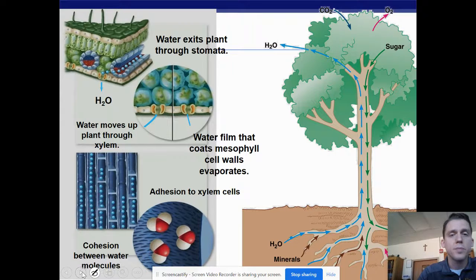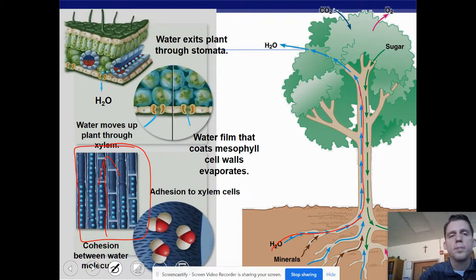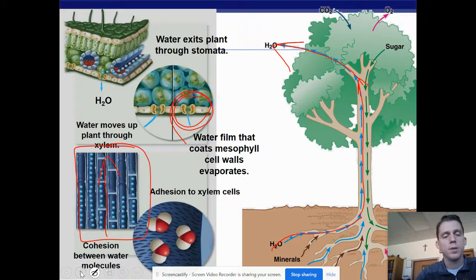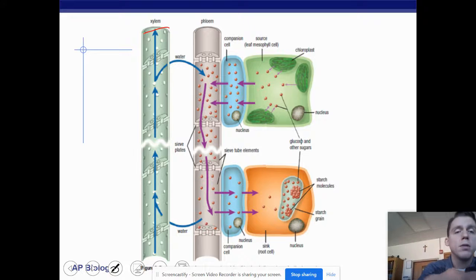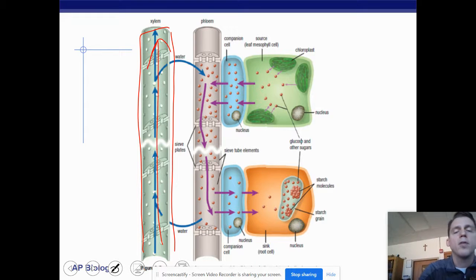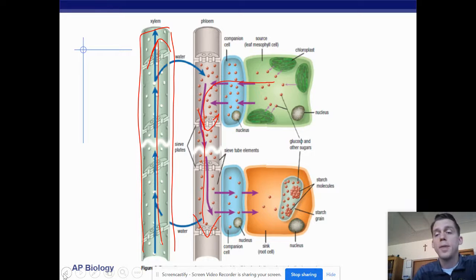To review: water moves up the roots, goes up the xylem, and eventually makes its way out through the stomata. The xylem carries water upward, while the phloem carries sugar — pushed into the phloem and moving downward. That is our overview of osmosis and water potential in plants. Please let me know if you have any questions.